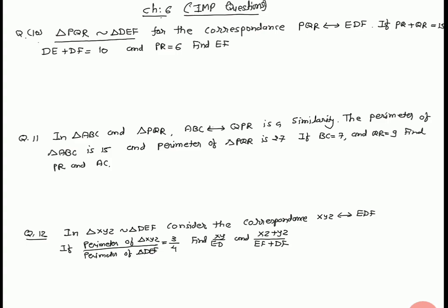Now we take AC upon PR equal to AB upon PQ. 6 upon PR equal to 4 upon 5. Therefore PR equal to 6 into 5 upon 4 equal to 30 upon 4 equal to 7.5. Therefore PR equal to 7.5.